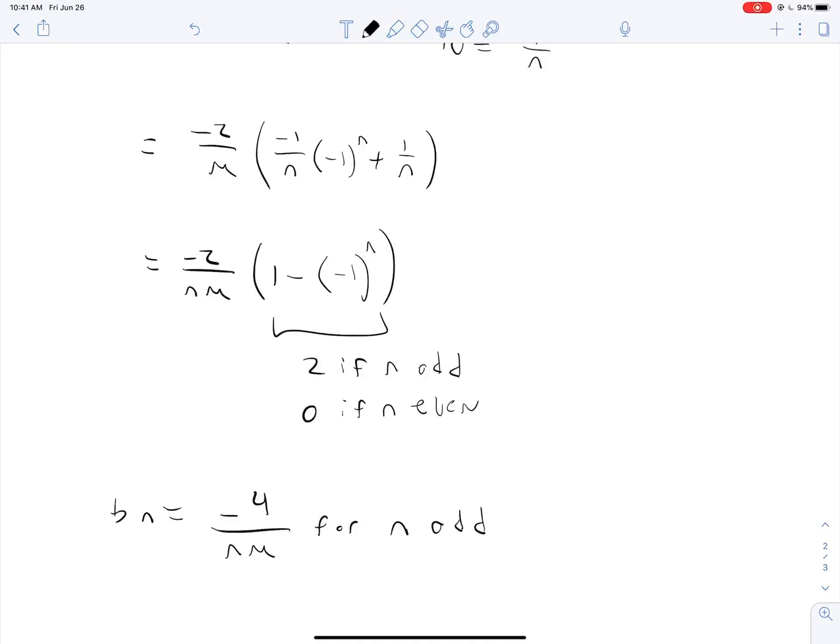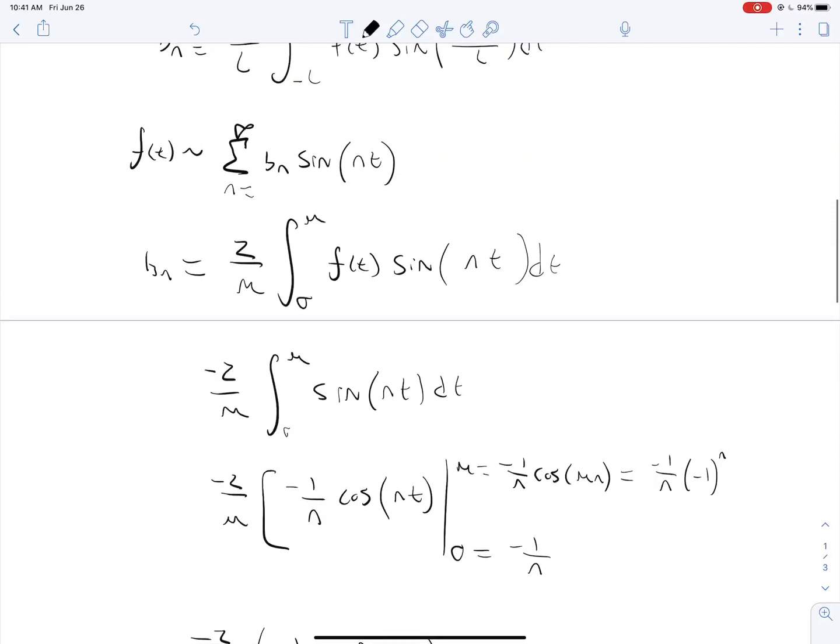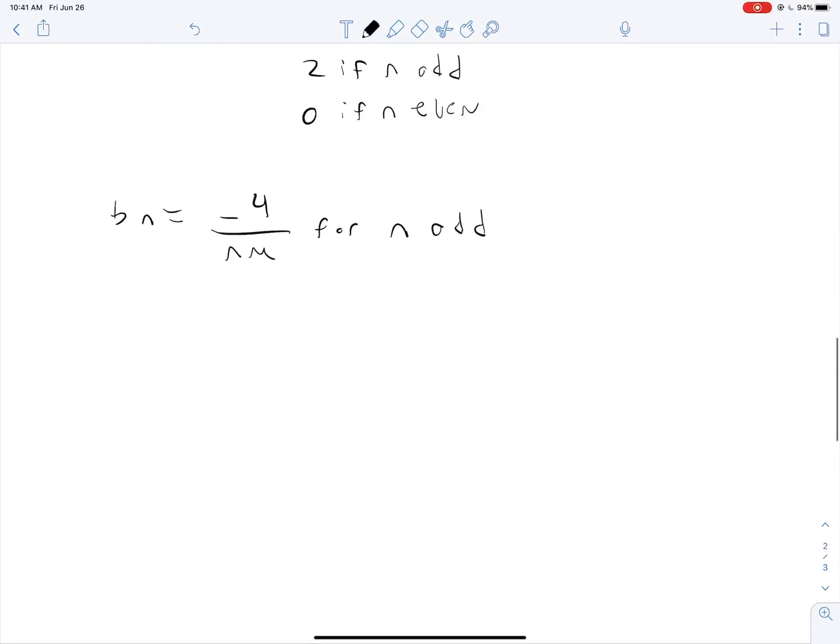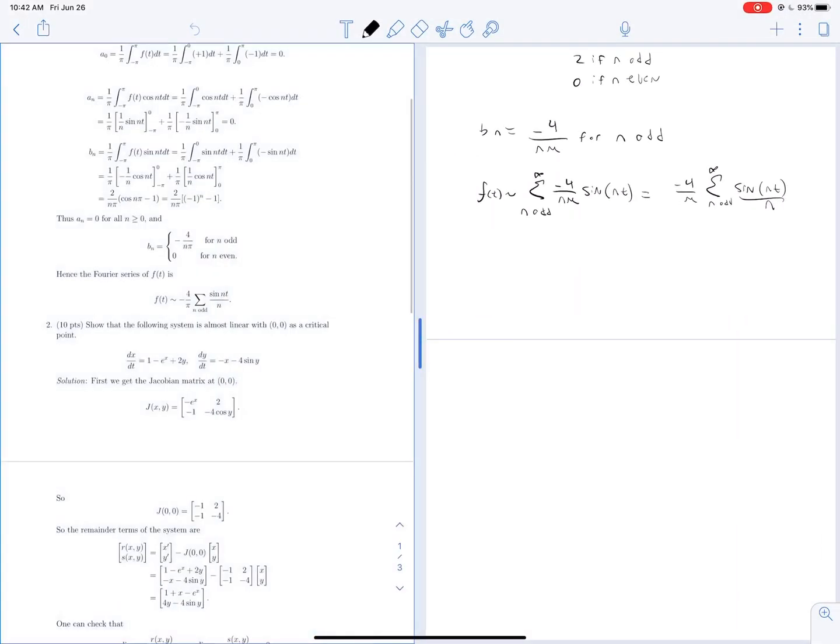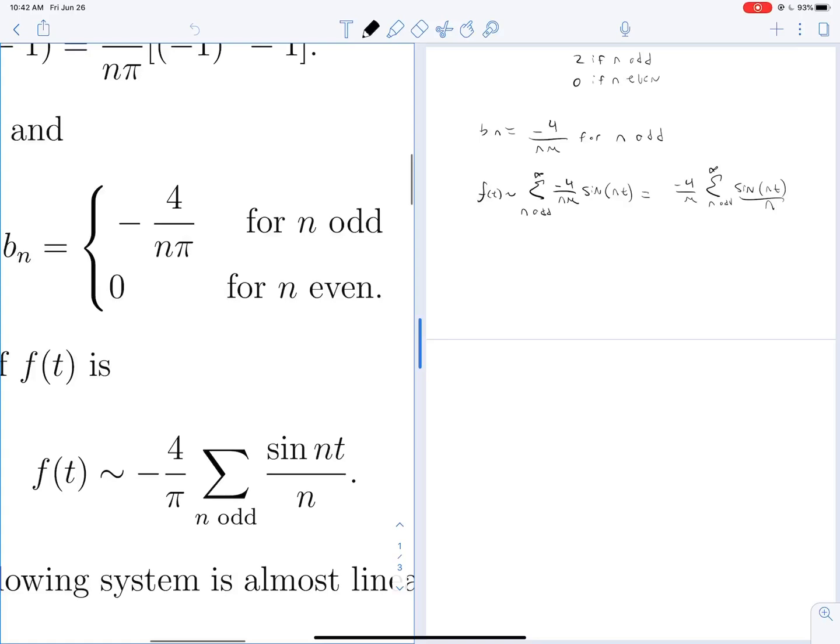Since our full equation is b_n times sine of n t under that sum, f of t is approximately the sum from n odd to infinity of negative 4 over n pi sine(n t). Sometimes you'll see this rewritten with the constant pulled out, so minus 4 over pi sum from n odd to infinity of sine(n t) over n. If we take a look at our answer key, we will see exactly that.